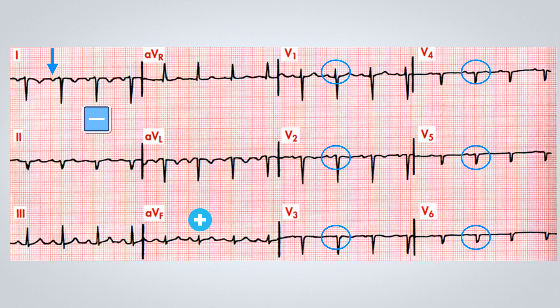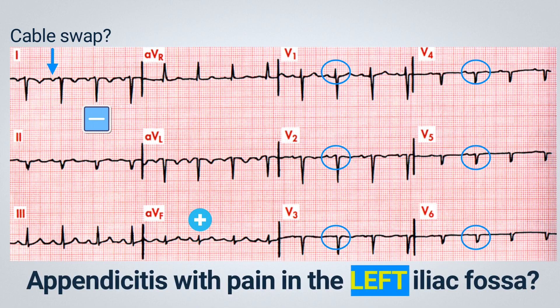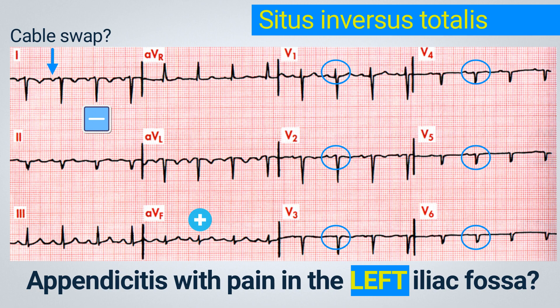One might think there was a cable swap, but when examining the precordial leads, the R wave from V1 to V6 is also decreasing instead of progressing. We then associate this with the clinical picture: the patient has a diagnosis of appendicitis with pain in the left iliac fossa. Generally, patients with appendicitis have pain in the right iliac fossa, which is typically where the appendix is located. So here we have the tracing of a patient with situs inversus totalis, meaning this is a classic dextrocardia ECG. To confirm this is not a swapped electrode, you look at the precordial leads: from V1 to V6, instead of getting closer to the heart, we are moving away from it, because this patient's heart is on the right, not on the left.